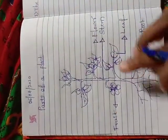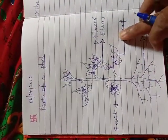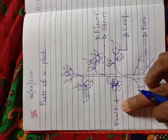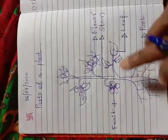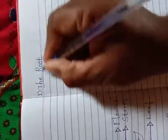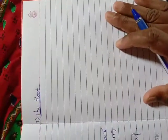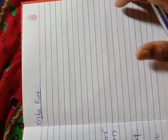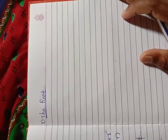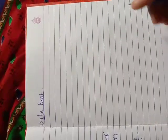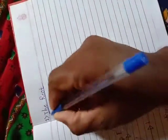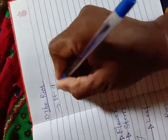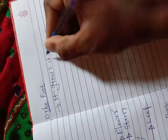This class we will learn about all these parts of the plant — root, leaf, stem, flower, and fruit. First we have to study one by one. The first one is root. The root is one important part of the plant, and it grows under the ground.